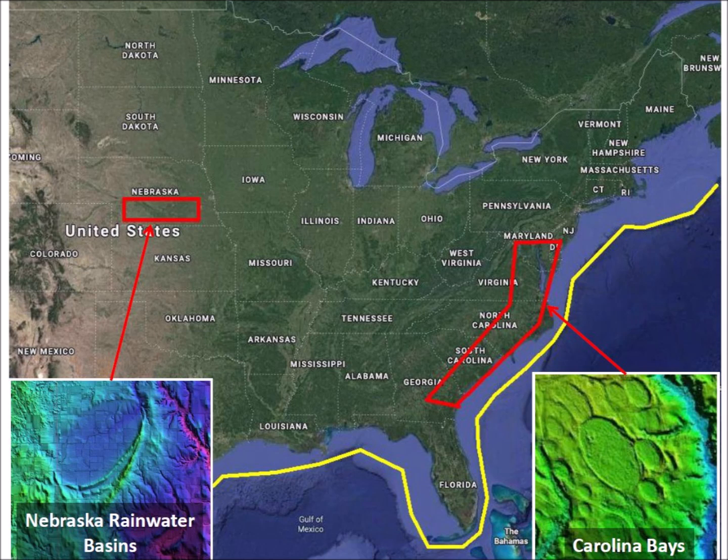The Nebraska Rainwater Basins are found in sandy deposits along the Platte River. The Carolina Bays are found on the east coast from New York to Florida, but they are most evident in North and South Carolina. The yellow line on this map indicates the approximate seashore during the Ice Age when the sea level was 120 meters lower than today. Many Carolina Bays have vanished under the sea.